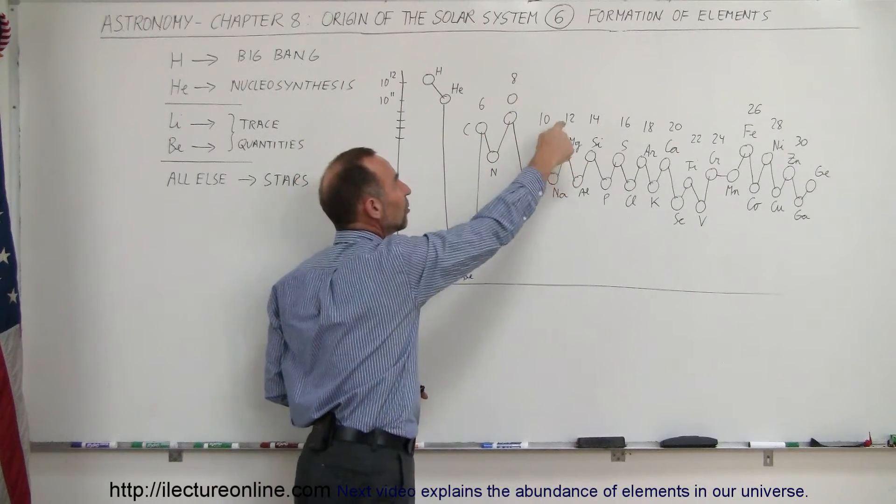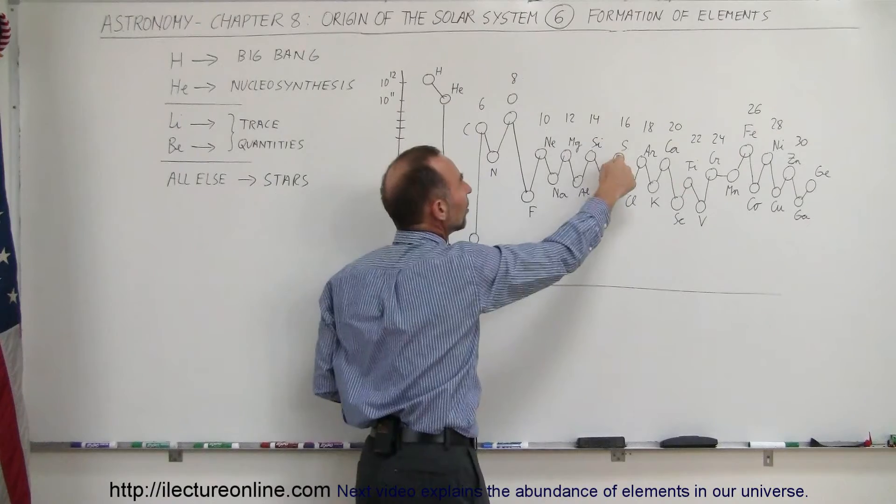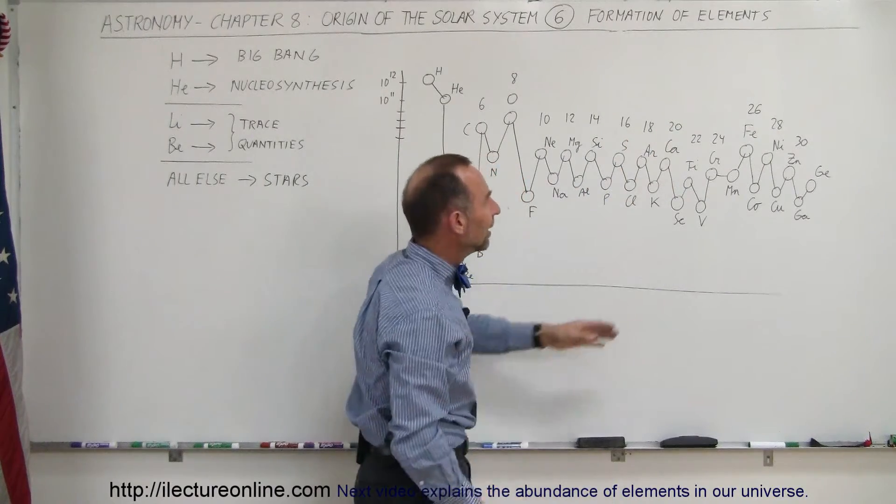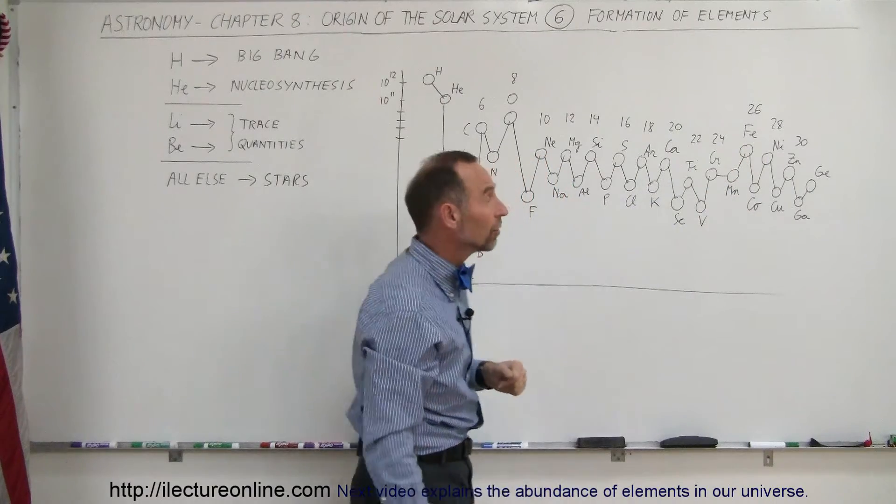...neon 10, magnesium 12, silicon 14, sulfur 16, argon 18, calcium 20 and so forth and iron being 26, one of the more abundant elements in the universe.